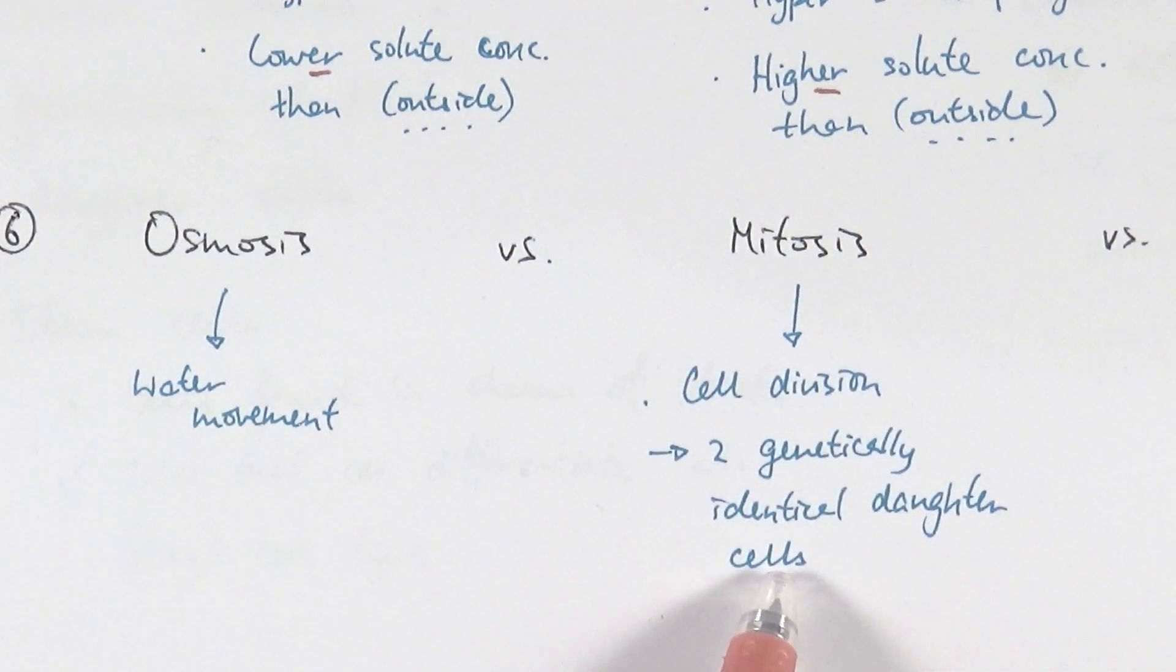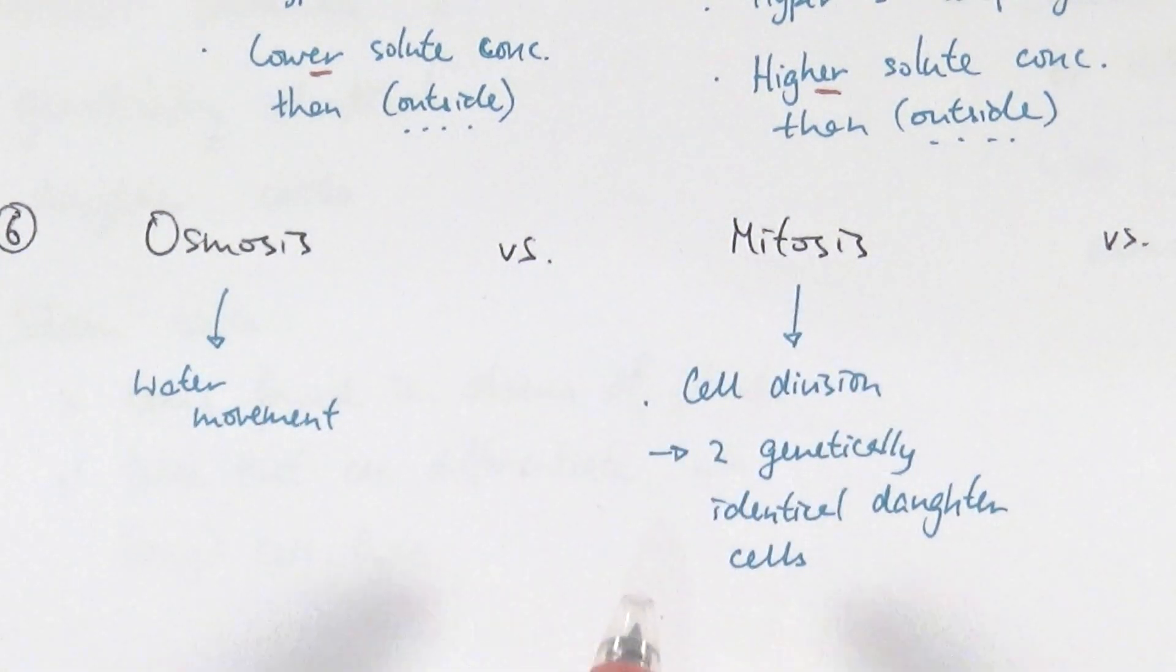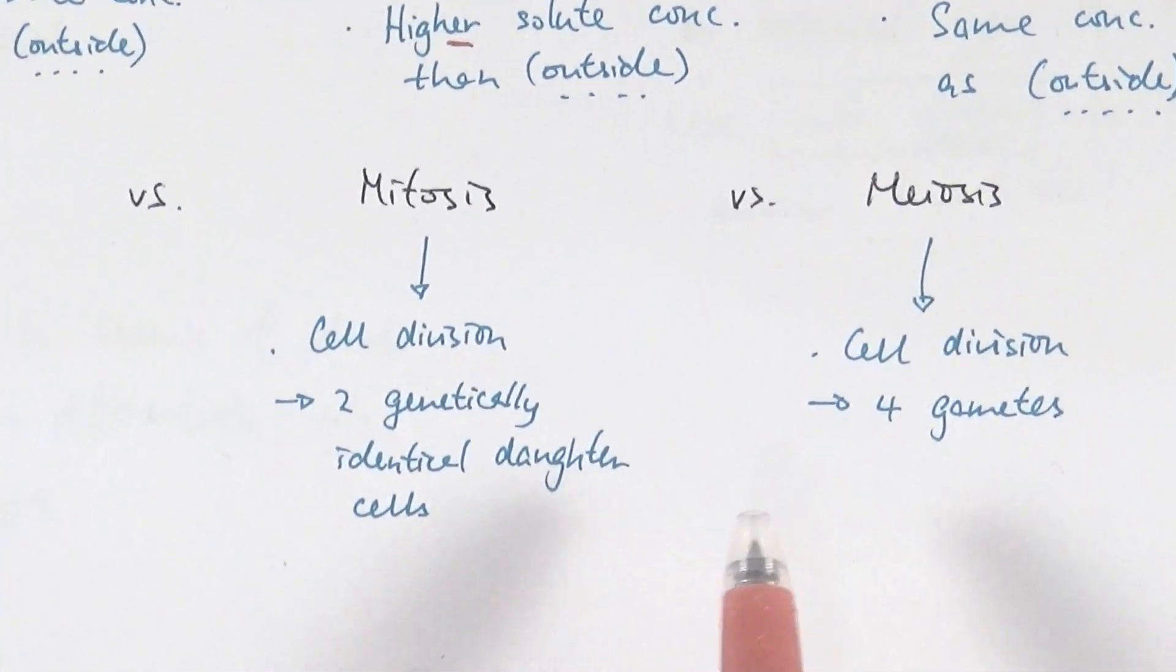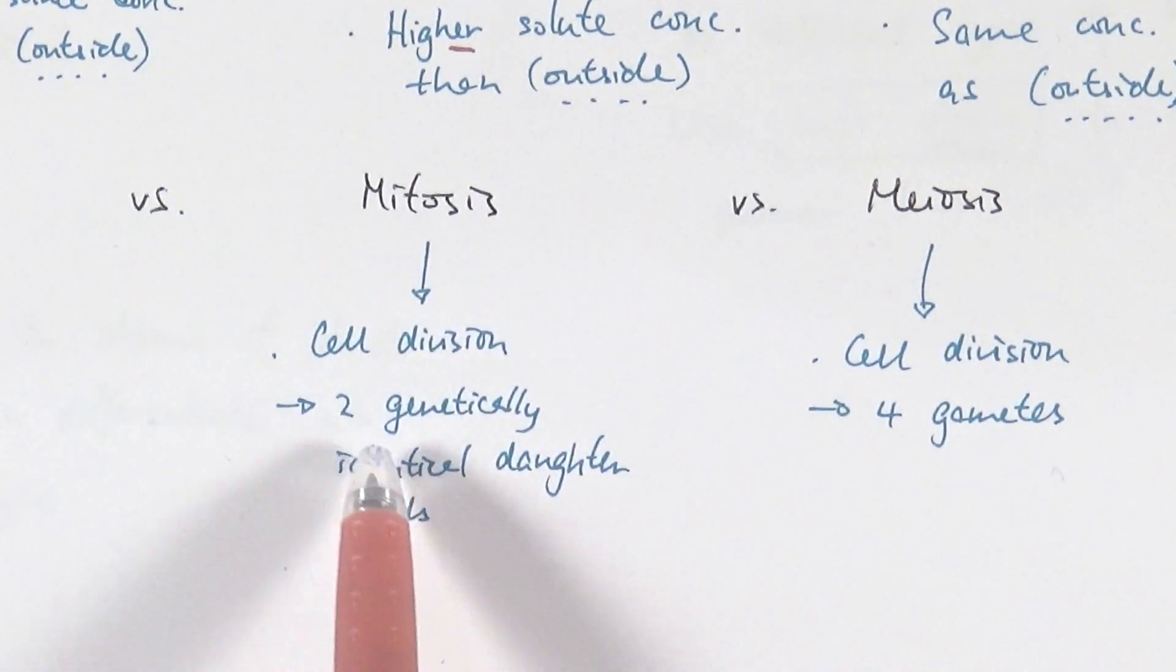We'll talk more about mitosis in chapter 2. But they are completely unrelated even though they end with the same stuff. Please make sure you don't mix them up. On that note, we might as well talk about mitosis and meiosis as well. They're both cell divisions, so yes there is a link there, but mitosis makes two genetically identical daughter cells. So in some sense it's cloning.